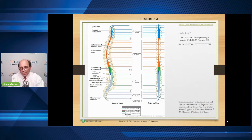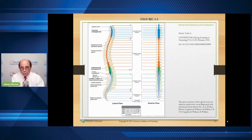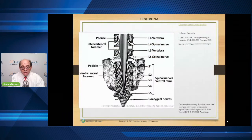The spinal cord ends at about the L1–L2 level of the lumbar spine. Below that level, it's all lower motor nerves. That's what you can see in that section with the lumbar nerves extending out. And that is what is the cauda equina — that's what we're looking at in this slide.